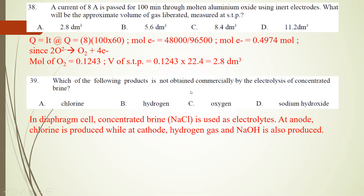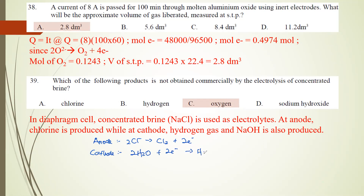Number 39: which product is NOT obtained commercially from the electrolysis of brine? In the diaphragm cell, products are chlorine, hydrogen, and sodium hydroxide. Oxygen is not a byproduct. At the anode: 2Cl- → Cl2 + 2e-. At the cathode: 2H2O + 2e- → H2 + 2OH-. The OH- then combines with sodium ions in the brine to form NaOH. So oxygen is not produced.